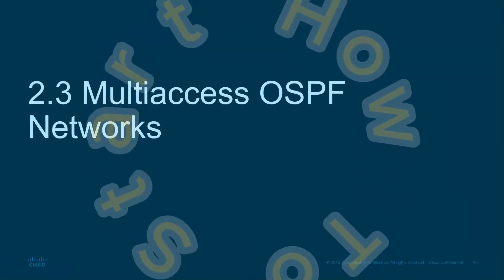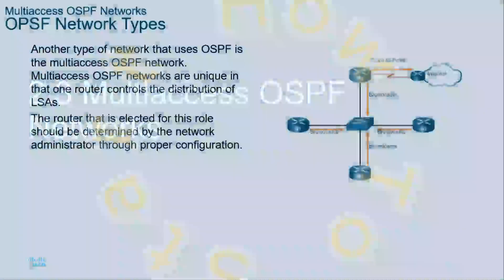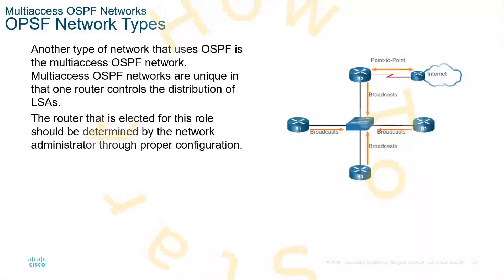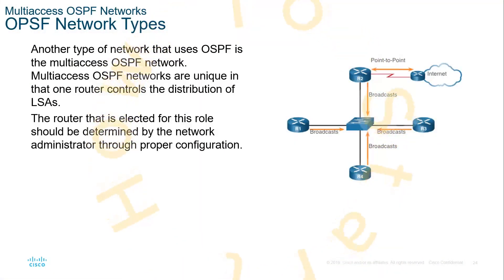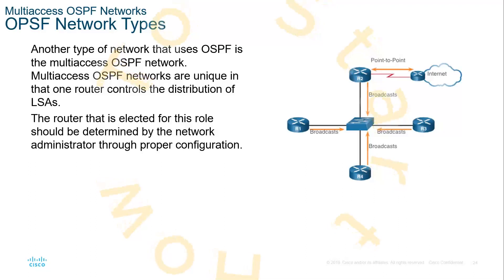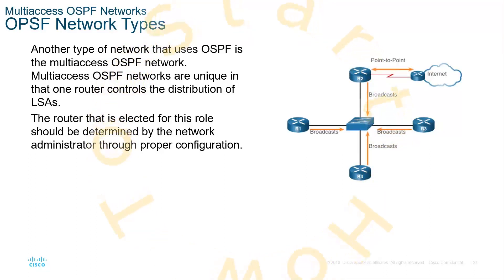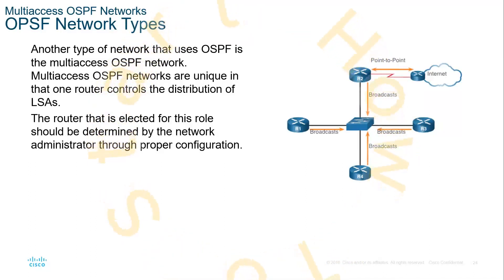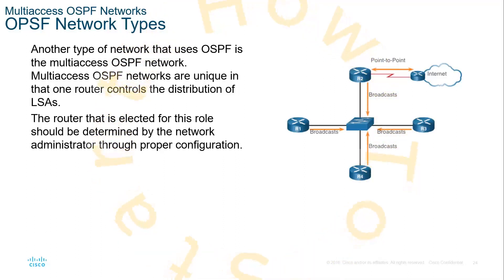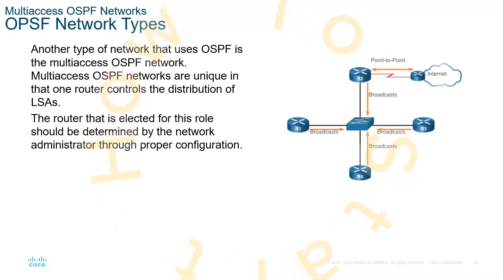We have our multi-access OSPF network, which is not point to point. These are going to be via broadcast. So another type of network that uses OSPF is multi-access. Here we're talking about the distribution of link state advertisements, also known as LSAs.